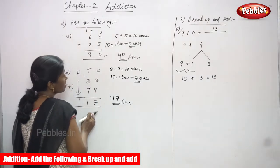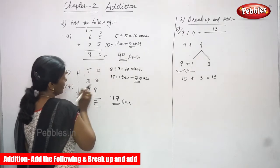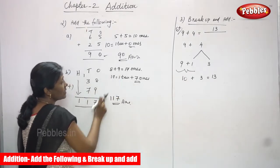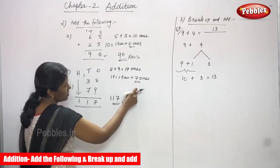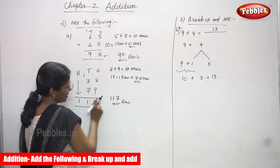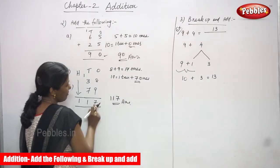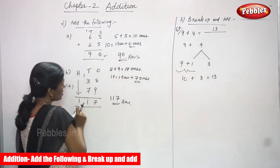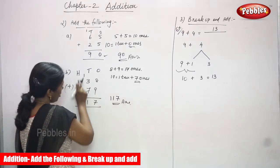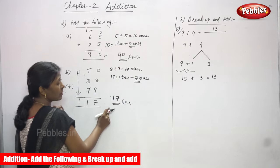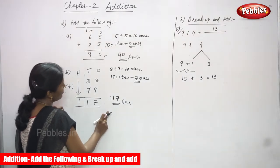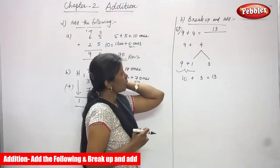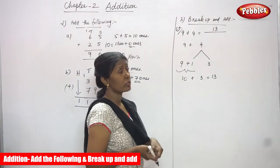For the second sum: I started the addition with ones first — eight plus nine gives seventeen ones. Seventeen means one ten and seven ones, so I write seven in the ones place. The carry over of one ten goes to the tens place. Three plus one carry over is four, and four plus seven is eleven. So eleven means the one is in the hundreds place — the answer is 117.